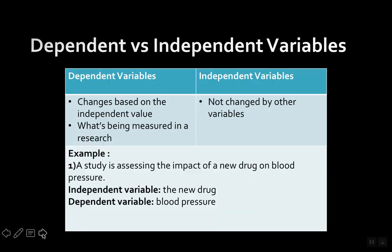Okay, dependent versus independent variables. Dependent variables are simply variables that change based on something — something causes them to change. This is usually what they want to measure in the research, to see what the intervention changes.